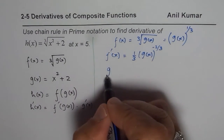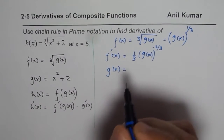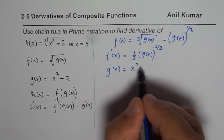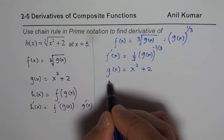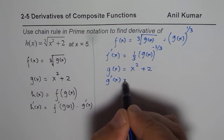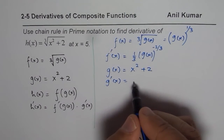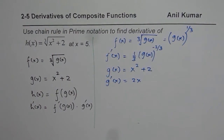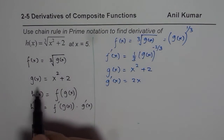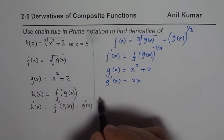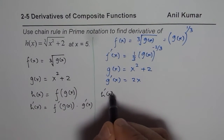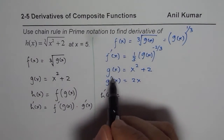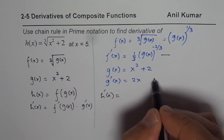Now g(x) equals x squared plus 2, so g'(x), the derivative of g(x), is 2x. The derivative of h, which is a combination of these functions — h'(x) is the product of the derivatives of these two.